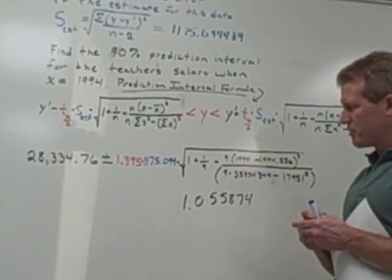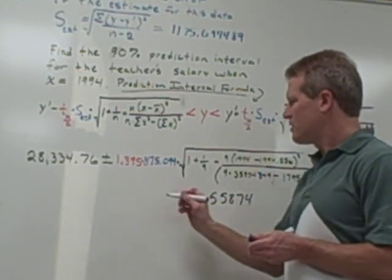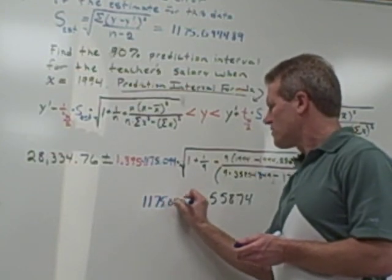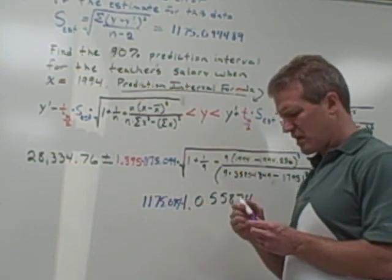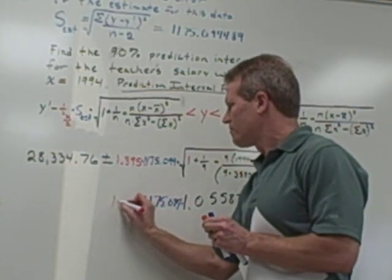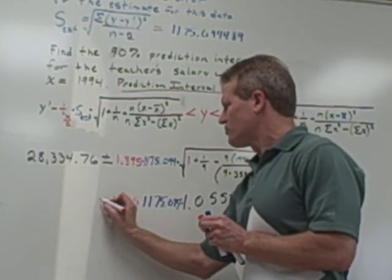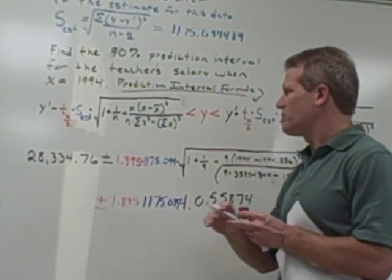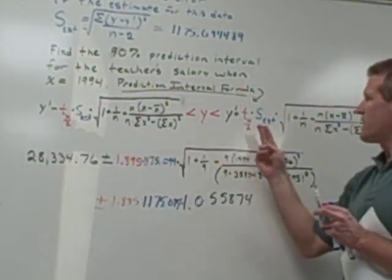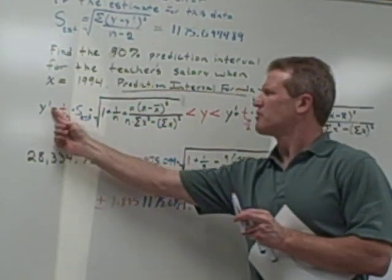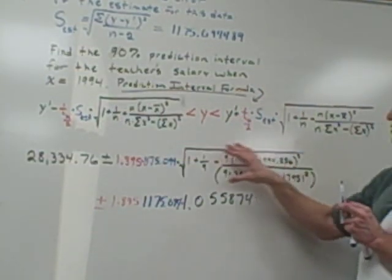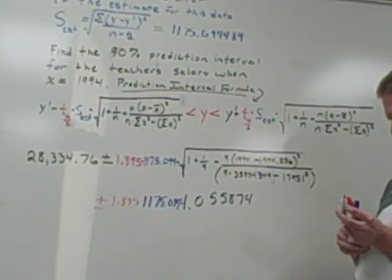Then, of course, you're still going to have to multiply by the 1175.094 and the 1.895. Notice I had a plus or minus. I didn't want to rewrite this entire formula out again. Notice that this left side of the formula matches the right side. The only difference is this minus versus this plus. That's the reason I wrote it in shorter form using the plus or minus.